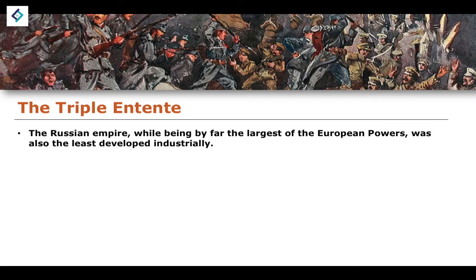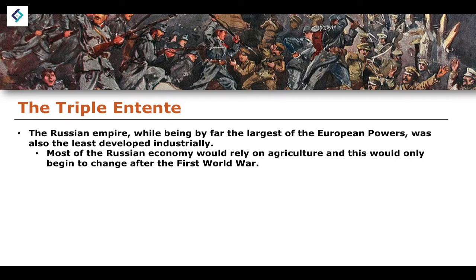Russia, while being by far the largest of the European powers geographically — having the most territory — was also, at the turn of the century, the least industrially developed. Most of the Russian economy relied on agriculture. This would begin to change after the First World War; we see the Russian Revolution and a great amount of industrialisation under Stalin with his five-year plans. But before the First World War, there was a very strong reliance on agriculture.